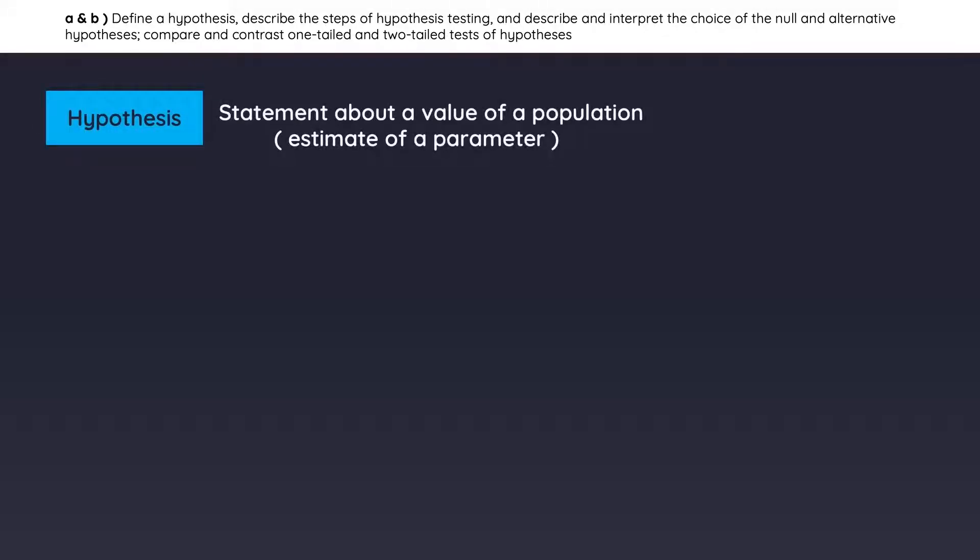It is a statement about a value of a population. So basically, it is a forecast of some population parameter. For example, here we have a population, and we want to know the average age of the population.